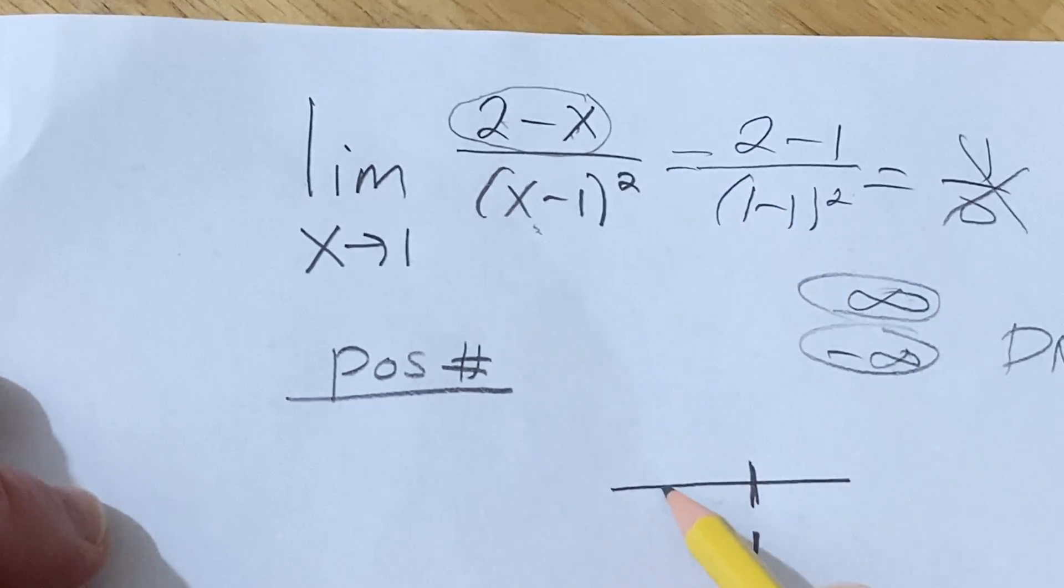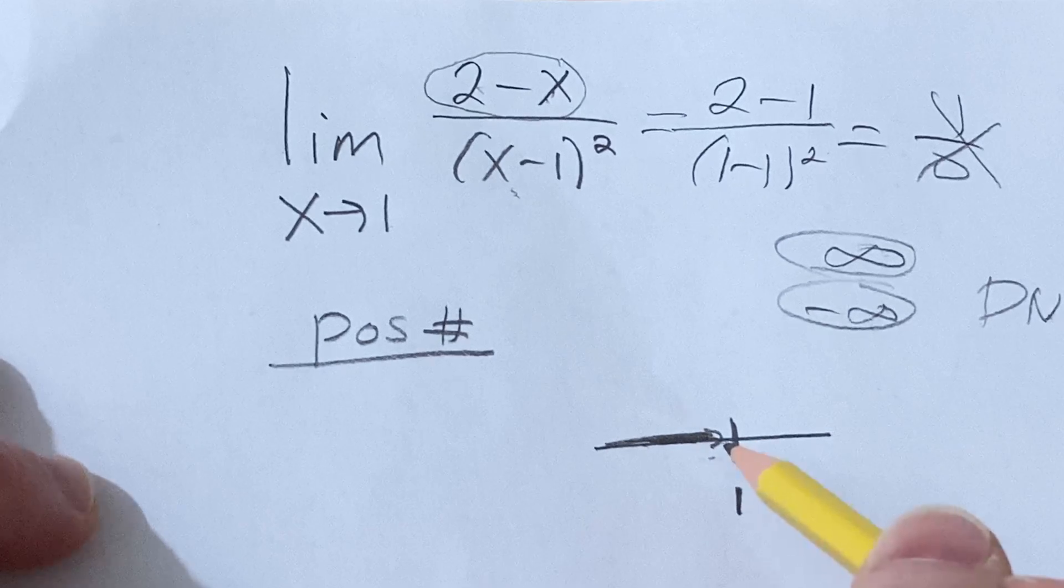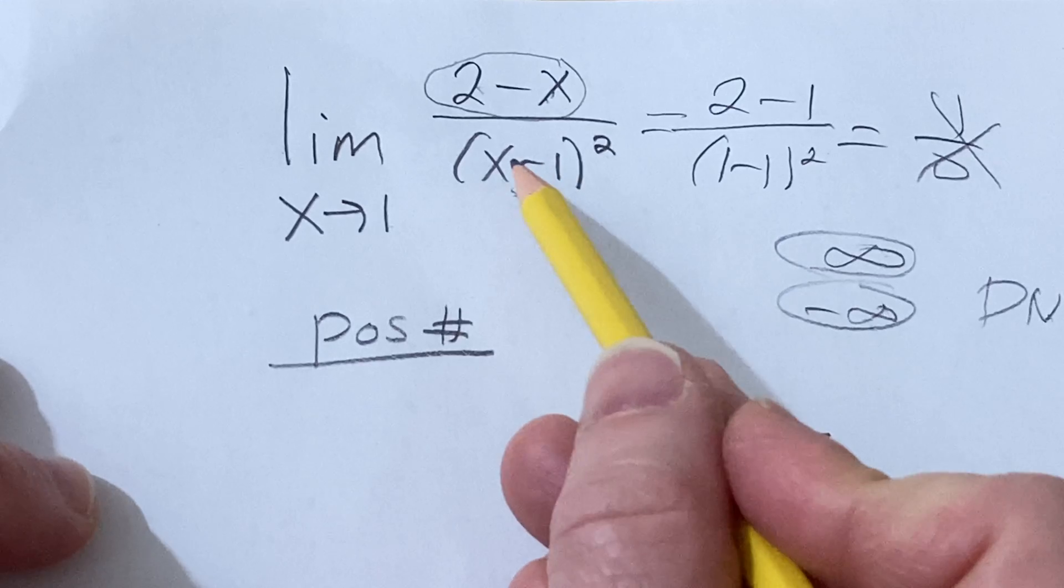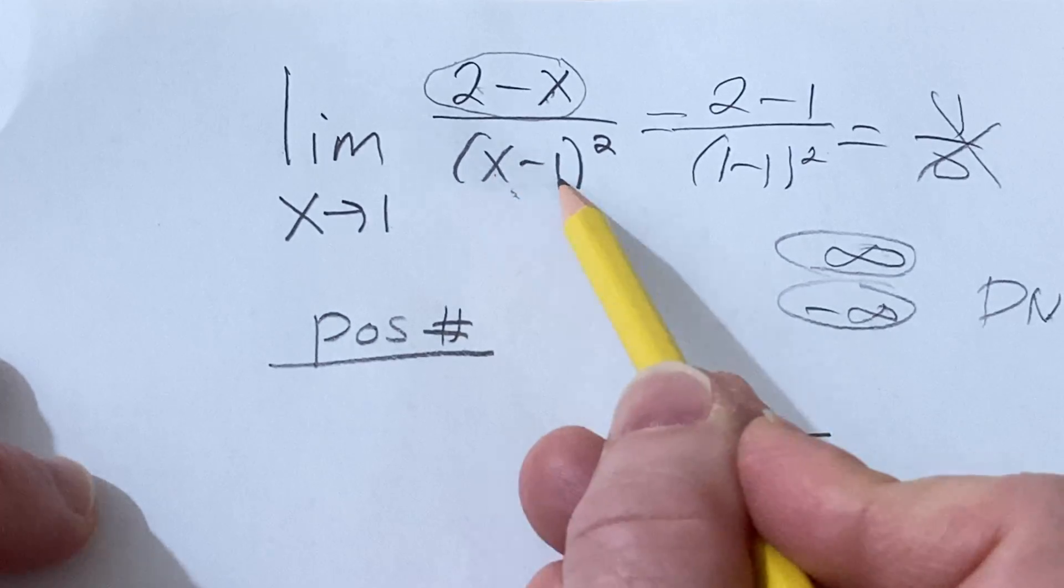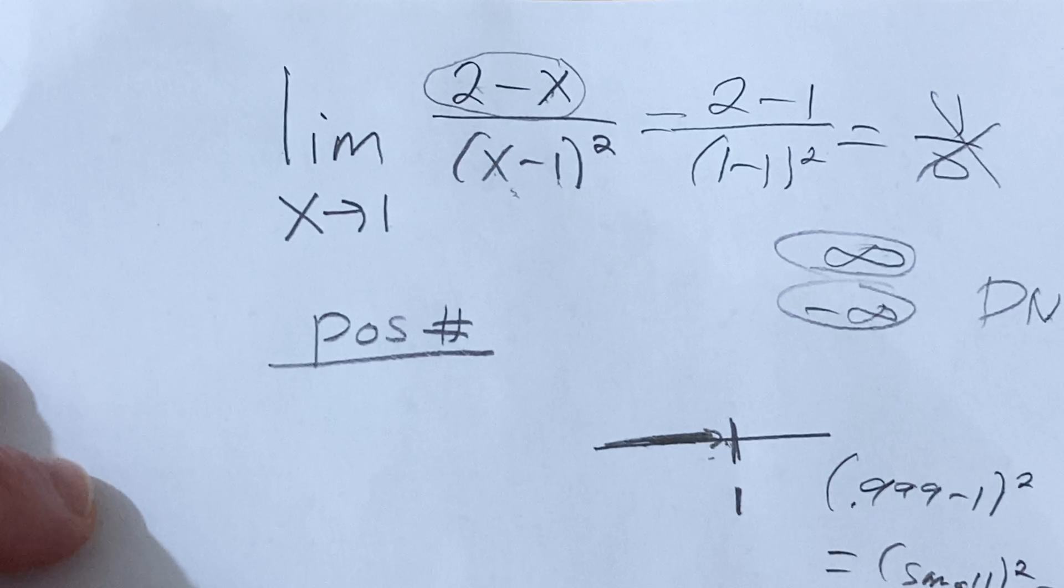So for example, if I approach from the left, I'm getting really close to 1 from the left. So you might get something like .999999 at some point, or .99999999. It gets infinitely close to 1. So if you take a number that's really close to 1 and you subtract 1 and you square it, you get something small squared, so it's super small.